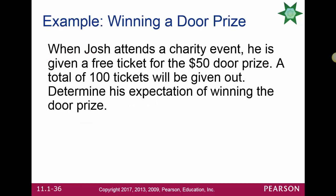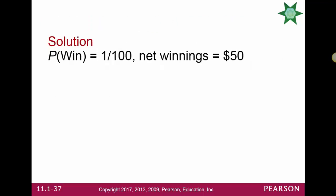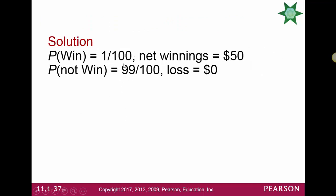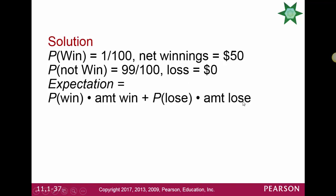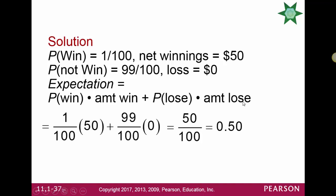When Josh attends a charity event, he's given a free ticket for a $50 door prize, and a total of 100 tickets are given out. There are two outcomes: he wins with probability 1 out of 100 and gets $50, or he doesn't win with probability 99 out of 100 and loses nothing since the ticket was free. His expectation is $0.50. So in the long run, if Josh played this game repeatedly, he would expect to win on average $0.50.